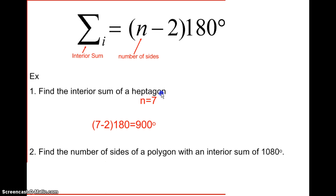The next type of problem would be finding n, finding the number of sides, given an interior sum. So we're given 1080 degrees. So now our equation is going to tell us to set 1080 equal to n minus 2 times 180. We need to distribute our 180.